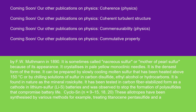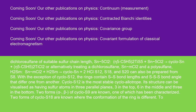Cyclo-SN (N = 9 to 15, 18, 20): these allotropes have been synthesized by various methods, for example treating titanocene pentasulfide and a dichlorosulfane of suitable sulfur chain length: SN-5Cl2 + (η⁵-C5H5)2TiS5 + SN-5Cl2 → cyclo-SN + (η⁵-C5H5)2TiCl2. Alternatively, treating a dichlorosulfane SN-mCl2 and a polysulfane H2Sm: SN-mCl2 + H2Sm → cyclo-SN + 2 HCl. S12, S18, and S20 can also be prepared from S8.